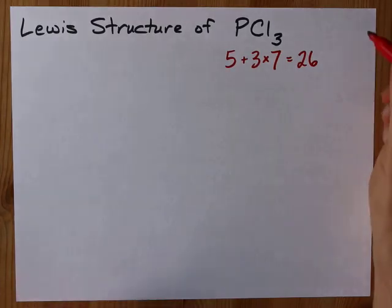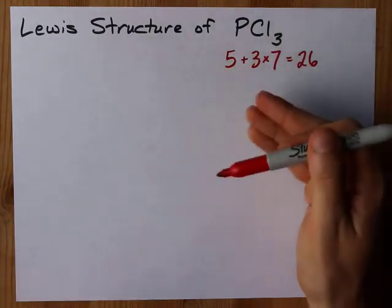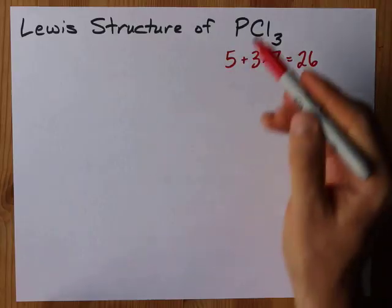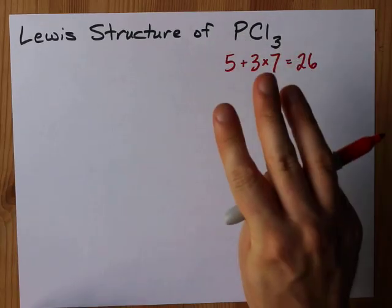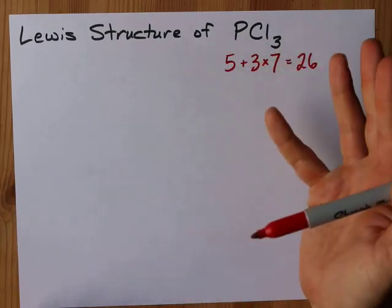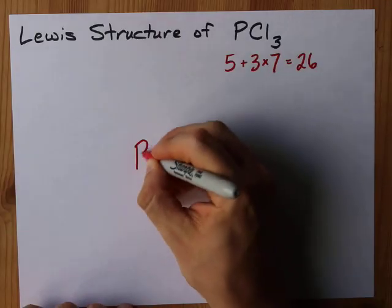Let's see what we can do. I like putting the element that can make the most bonds in the center. Phosphorus can have 3 bonds generally, sometimes 5, so I'm going to put it in the center.